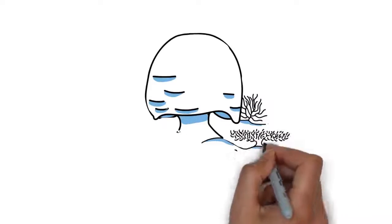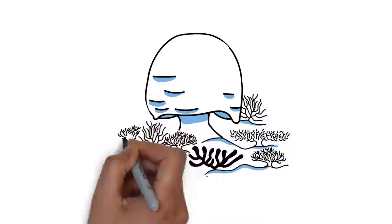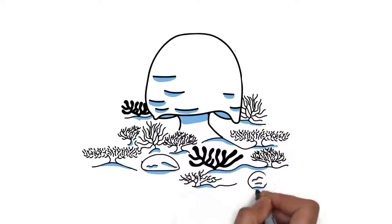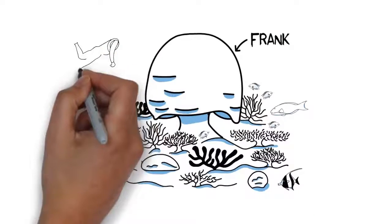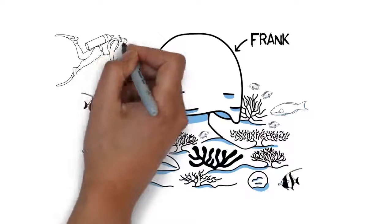This is Frank. Frank is a 400 years old coral who lives in the Great Barrier Reef. He is so old that he is surrounded by his grand grand grand grand grand kids.